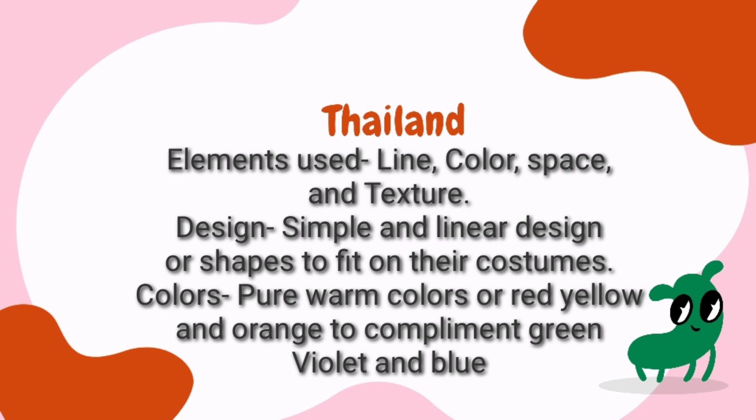Let's record the elements and principles used in Thailand. Elements used: Line, Color, Space, and Texture. Design: Simple and linear design or shapes to fit on their costumes. Colors: Pure warm colors of red, yellow, and orange to complement green, violet, and blue.